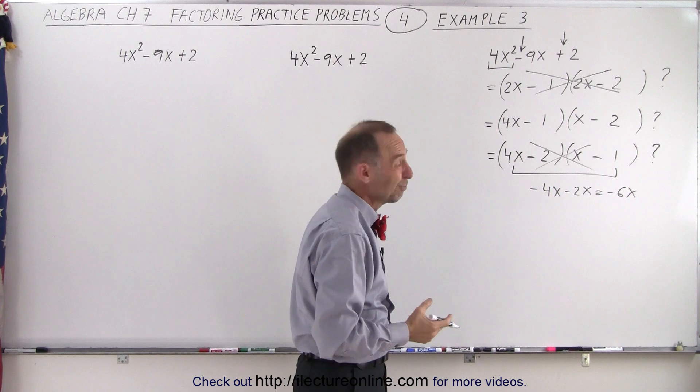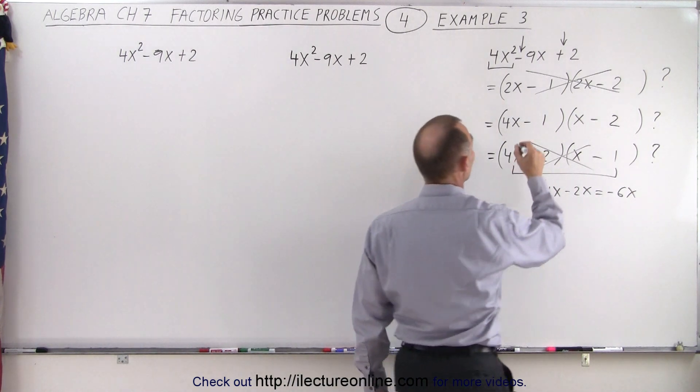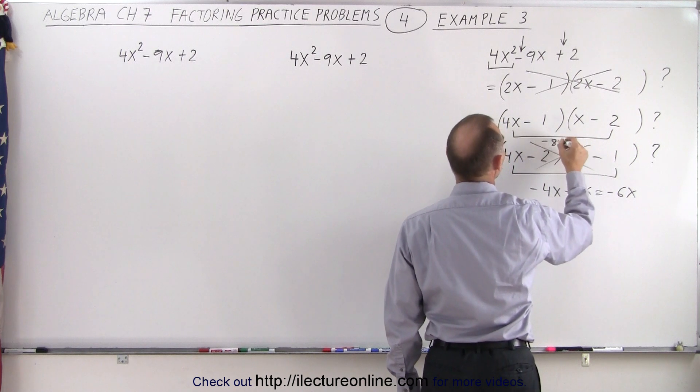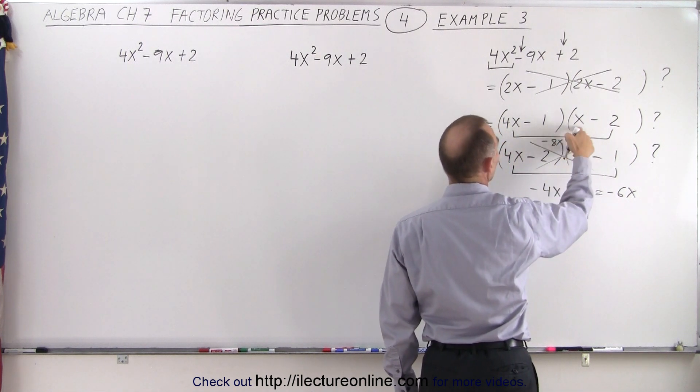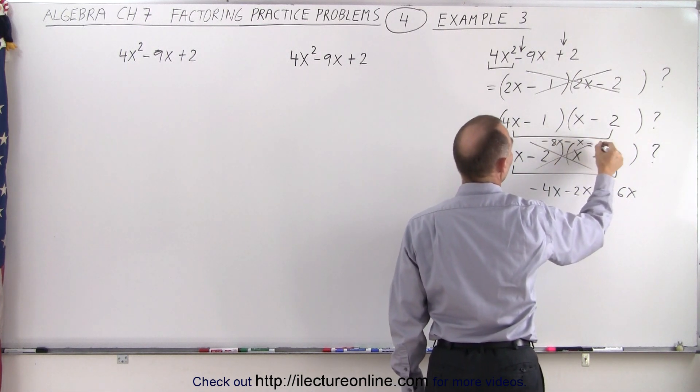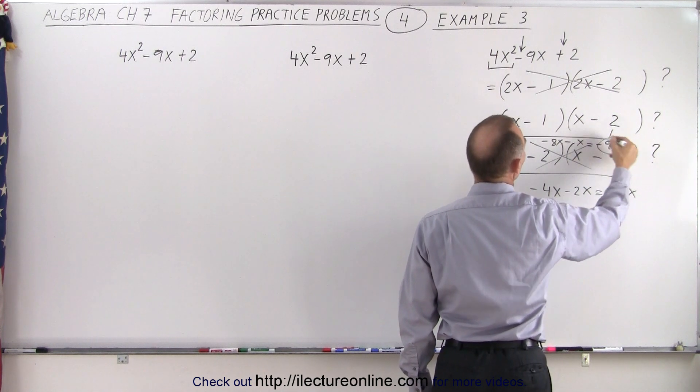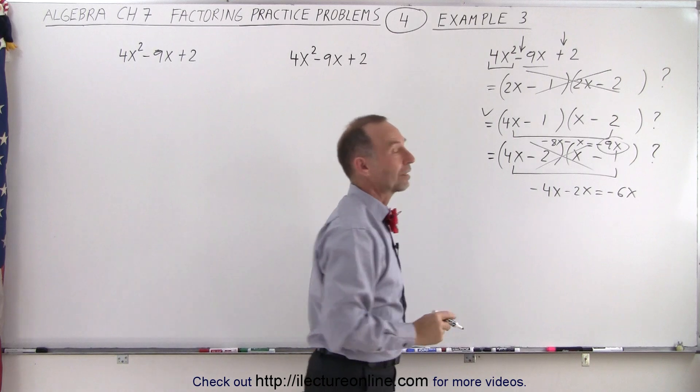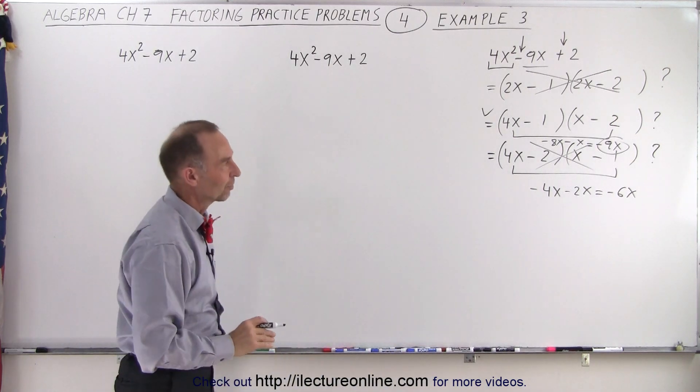The only option left must be the correct one. Notice when I multiply the 4x times negative 2, I get minus 8x, and if I multiply negative 1 times x, I get minus x, adds up to minus 9x, which is the right middle term. So this is the correct option. That's how we factor that.